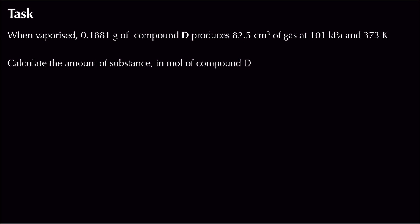In this question, when vaporised, 0.1881 g of compound D produces 82.5 cm³ of gas at 101 kPa and 373 K. We're asked to calculate the amount of substance in moles. Pressure is in kilopascals, so convert: 101 × 10³ Pa.